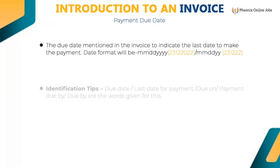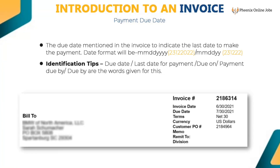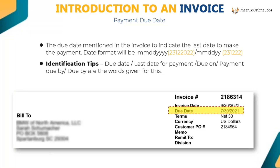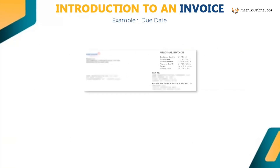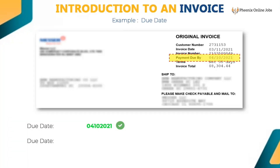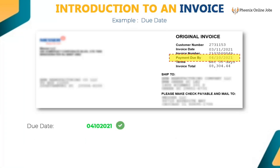The due date is mentioned in the invoice to indicate the last date to make payment. Keywords include: due date, last date for payment, due on, payment due by, or due by. The date format will be MM/DD/YYYY or MM/DD/YY. Key only the date — for example, 07302021 or 04102021. Do not key the words 'payment due by.' If 'payment due' or 'due date' is already populated, then remove those words.